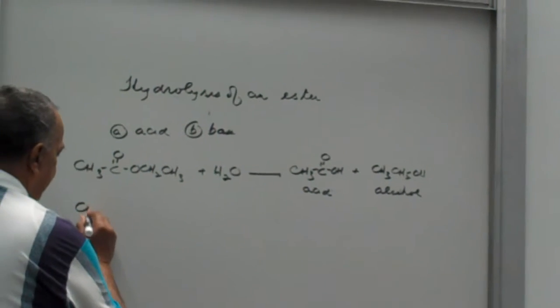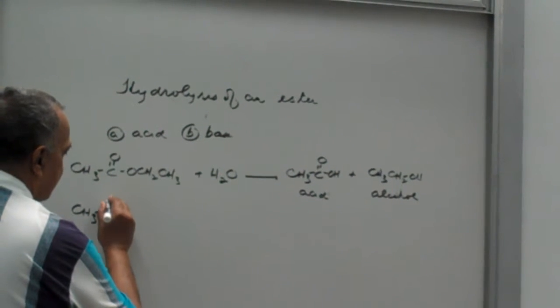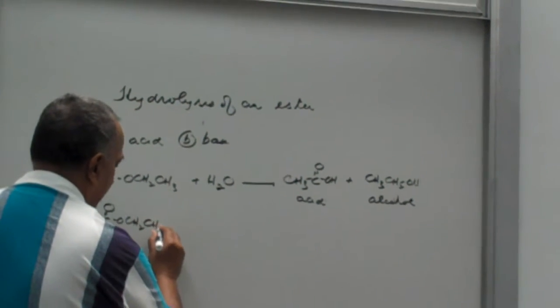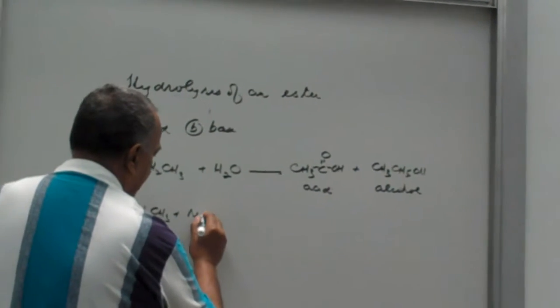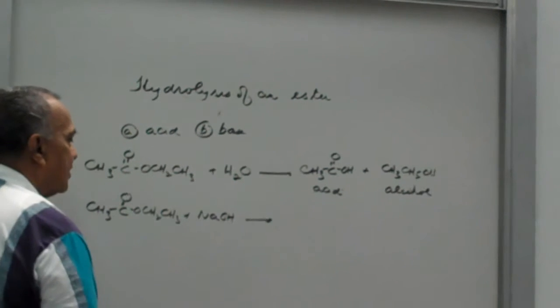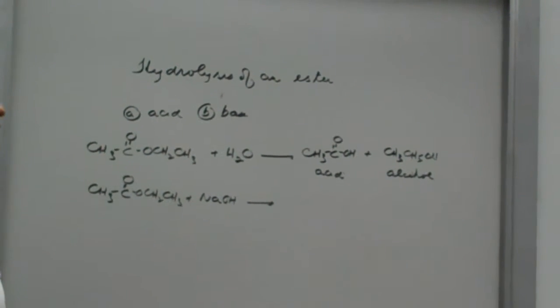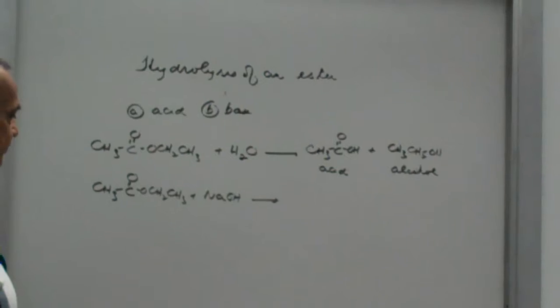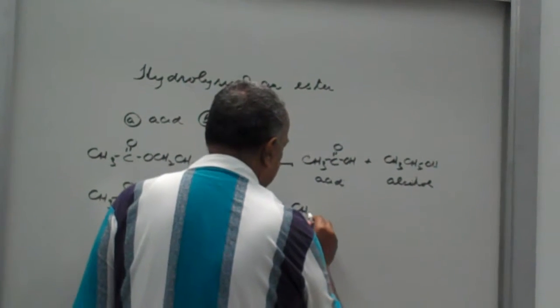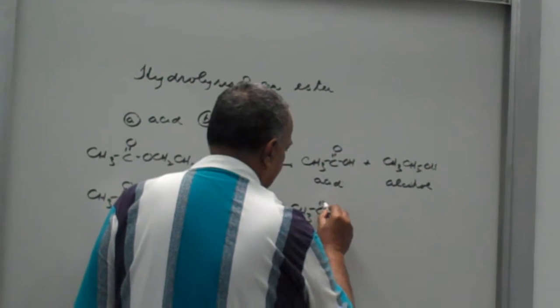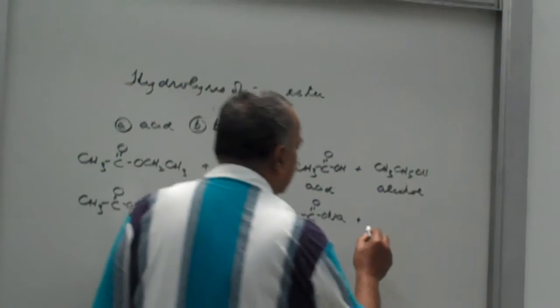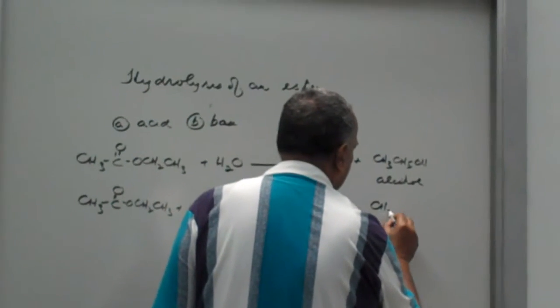Now if we carry out base hydrolysis. This time, we're going to hydrolyze it in the presence of a strong base, like sodium hydroxide. We're going to get a slight change. We're not going to get the free acid, but what we're going to get is the sodium salt of the acid. But we're still going to get the alcohol.